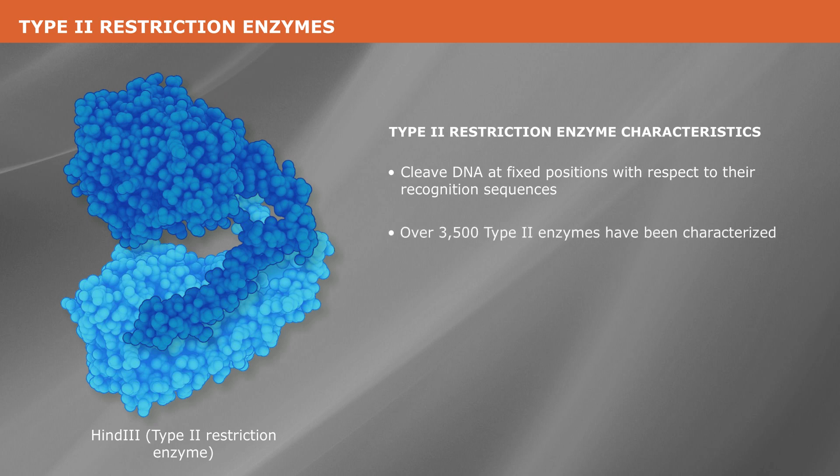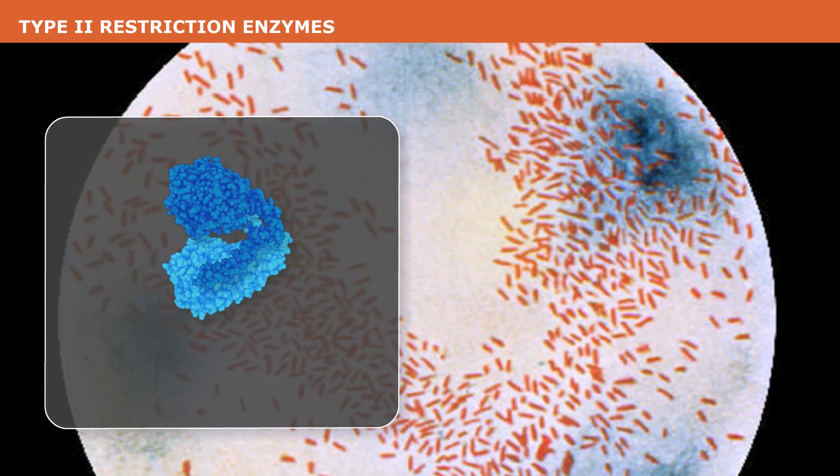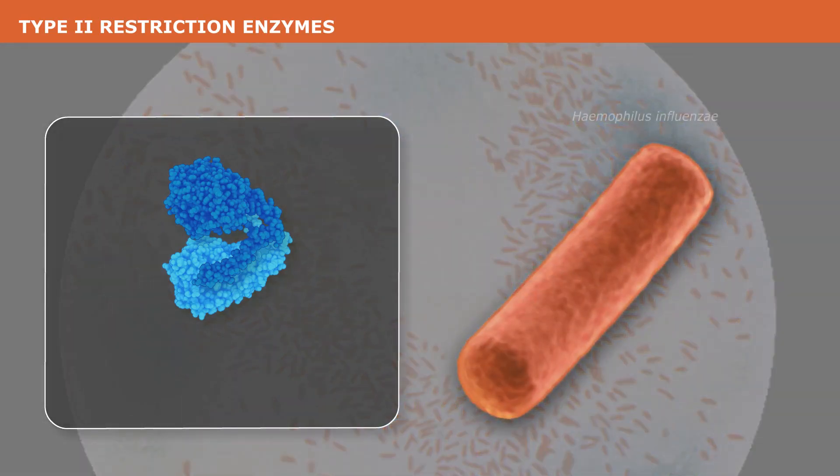Over 3,500 type 2 enzymes have been characterized, recognizing over 350 different DNA sequences. Restriction enzymes are named for the microorganism from which they were originally purified. For example, HindIII was the third enzyme found in Haemophilus influenzae, serotype D.